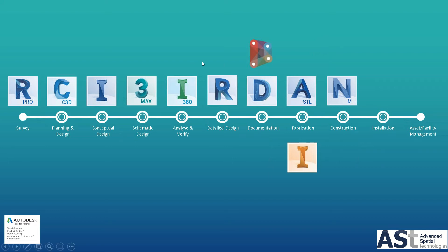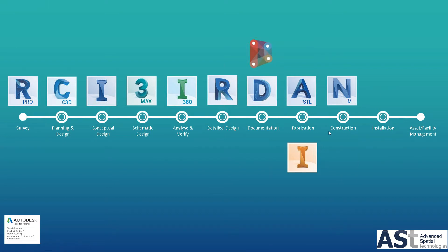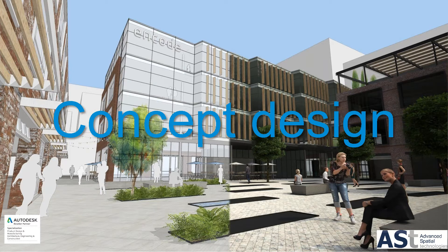We're going to be covering a few platforms today, and this is an example of a linear workflow: surveying tools, planning and design, going through conceptual design, schematic design, then analysis, detailed design and documentation, right through into some of the fabrication platforms included in the collection. Inventor, which isn't in the collection, is a platform that has interoperability with Autodesk core platforms in the collections.